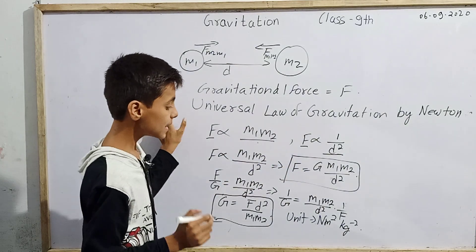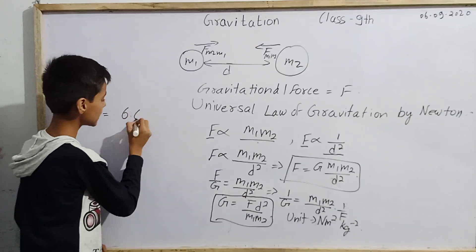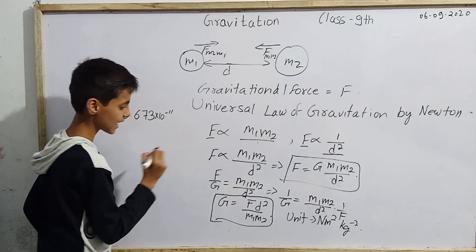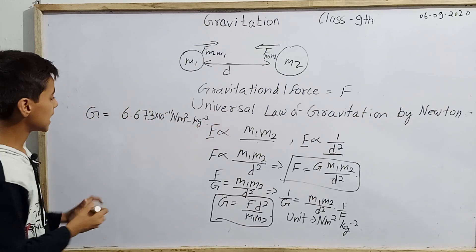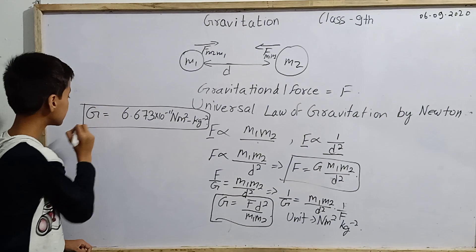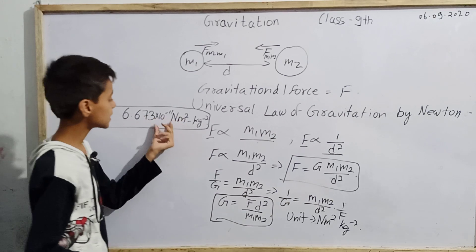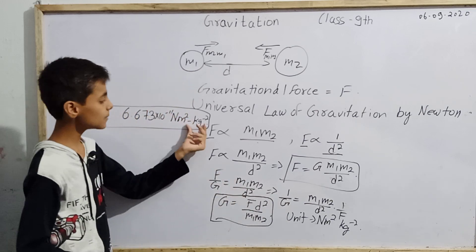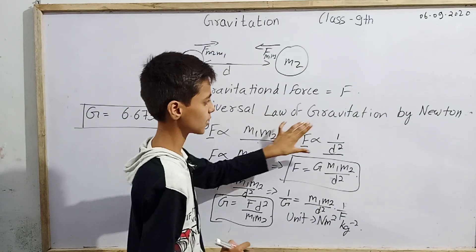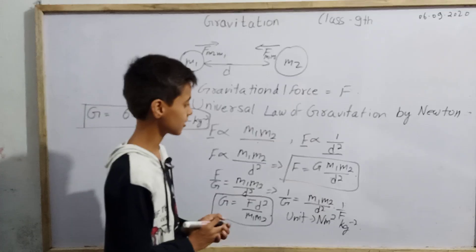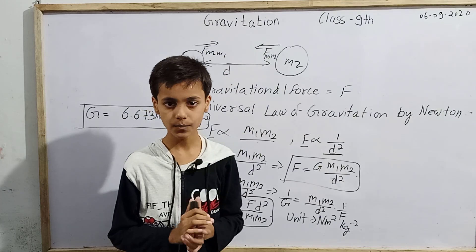The value of G is 6.673 × 10⁻¹¹ N m² kg⁻². This is a very important value that will be helpful for solving numerical problems. So this was the introduction to gravitational force and the universal law of gravitation given by Sir Isaac Newton. In the next video, we will study more points related to Chapter 10: Gravitation from Class 9. Thank you.